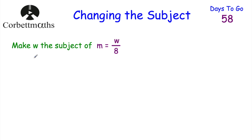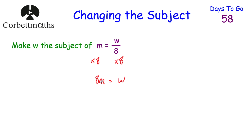Let's have a look at another question. We've been asked to make W the subject of M equals W over 8. So we want to get W on its own. At the minute we've got W divided by 8, so we don't want this divided by 8 here. We're going to multiply both sides by 8. M multiplied by 8 is 8M. On the right hand side, we had W divided by 8; we multiplied by 8 to get rid of the divide by 8, so we're just left with W. So we'd have 8M equals W, or turning it around: W equals 8M.